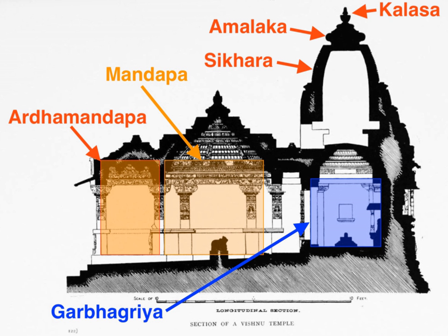The temple is a place for tirtha, or pilgrimage. All the cosmic elements that create and celebrate life in the Hindu pantheon are present in a Hindu temple — from fire to water, from images of nature to deities, from the feminine to the masculine, from kama to artha, from the fleeting sounds and incense smells to purusha. The architectural principles of Hindu temples in India are described in Shilpa Shastras and Vastu Shastras. Hindu culture has encouraged aesthetic independence to its temple builders, and architects have sometimes exercised considerable flexibility in creative expression by adopting perfect geometries and mathematical principles in Mandir construction to express the Hindu way of life.